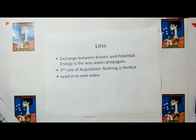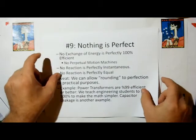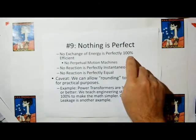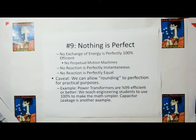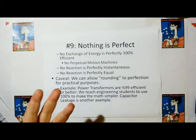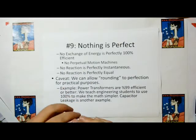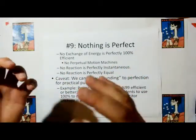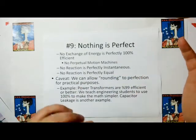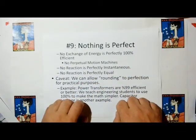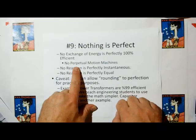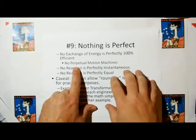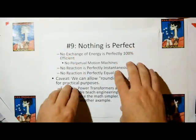And so I'm going to bring up the ninth rule of acquisition, where nothing is perfect. In other words, if we're exchanging, no exchange of energy is perfectly 100% efficient. No engineer will ever tell you that any circuit they derive is perfectly 100% efficient. Capacitors have loss, everything has loss. So, if we're constantly transferring energy between potential and kinetic and back again, each transfer of energy cannot be 100% efficient. That would mean that light is a perpetual motion machine. And we're going to cover this in more detail in the next video. We're going to get into loss using Olber's paradox.